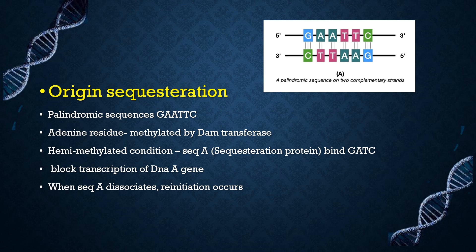This hemimethylated state is recognized by a protein called SeqA, the sequestration protein. These proteins bind the palindromic sequences, and SeqA interacts and binds preferably to phospholipids in the membrane, physically sequestering the origin from initiator proteins. SeqA hides the DNA gene and blocks transcription of the DnaA gene, thus blocking production of DnaA protein and inhibiting initiation. The dissociation constant of SeqA protein is high, and whenever they dissociate from these palindromic sequences the origin becomes available for re-initiation.